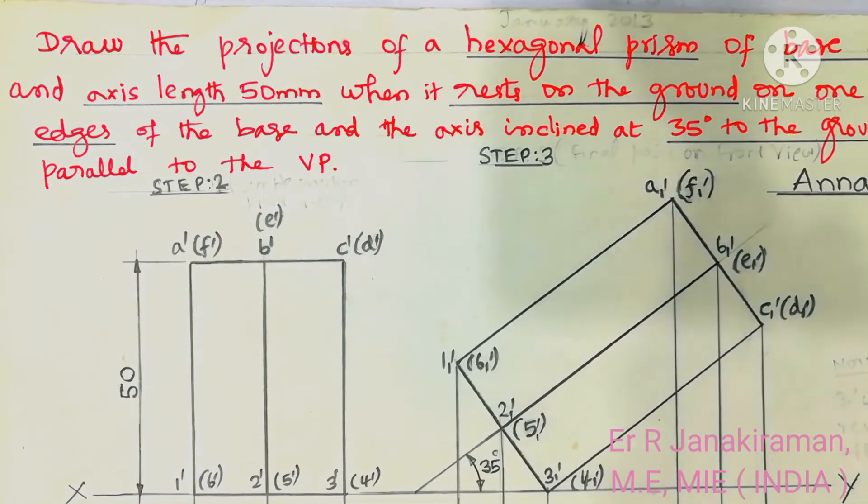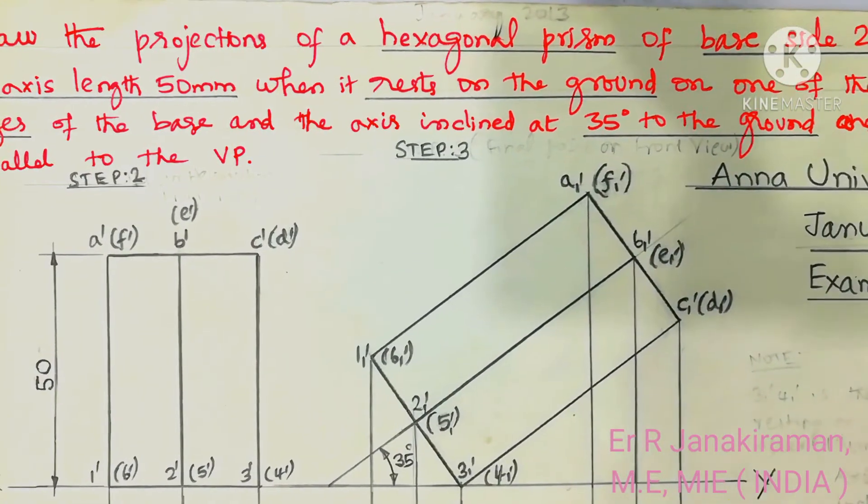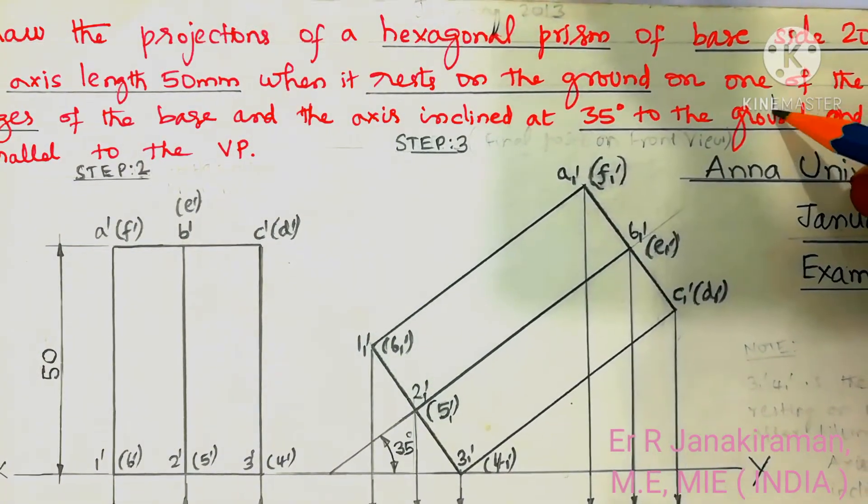So the ground can also be called the horizontal plane. That is the axis inclined at 35 degrees to the HP.